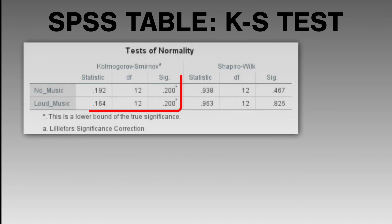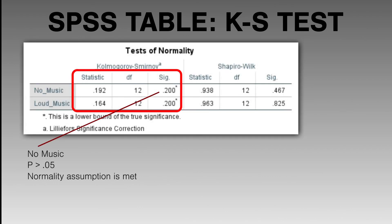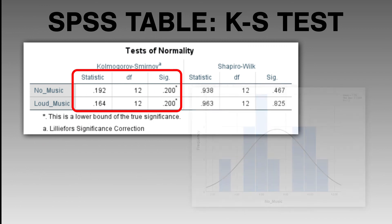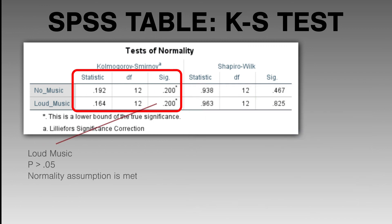The tests of normality produce a normality table. Focusing on the Kolmogorov-Smirnov test, the no music condition shows a significance value of 0.20, which is more than 0.05 — so the normality assumption has been met, as confirmed by the histogram showing a normal distribution curve. The loud music condition also shows a significance value of 0.20, again more than 0.05, so the normality assumption is met for that condition too.